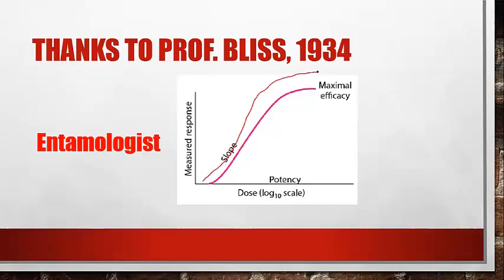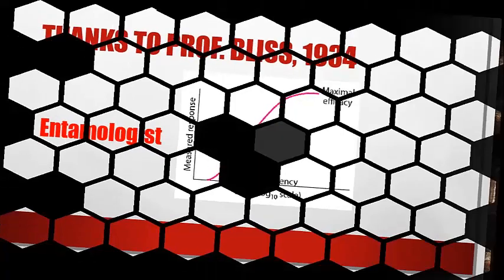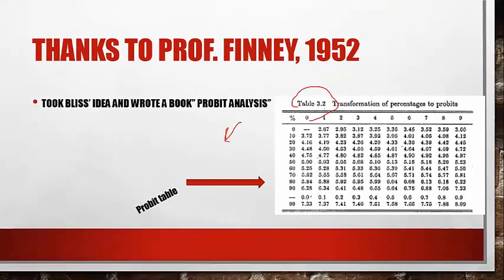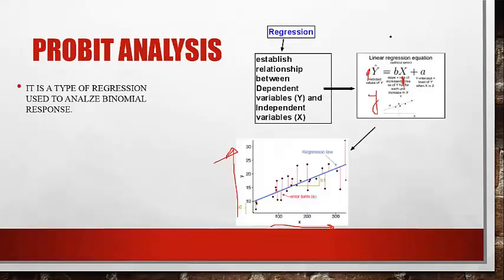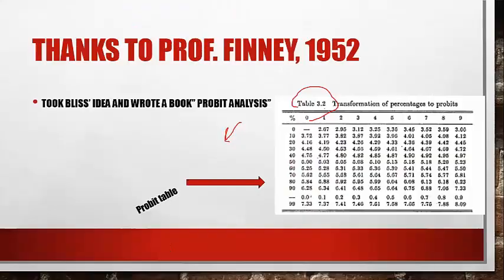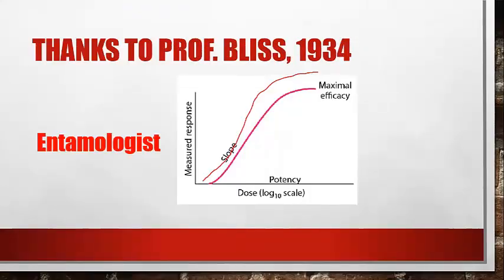The problem was that the relationship between response and concentration followed a sigmoid S-curve, but regression analysis at that time was only used on linear data. So Professor Bliss developed an idea to transform this sigmoid curve into a linear straight line curve.